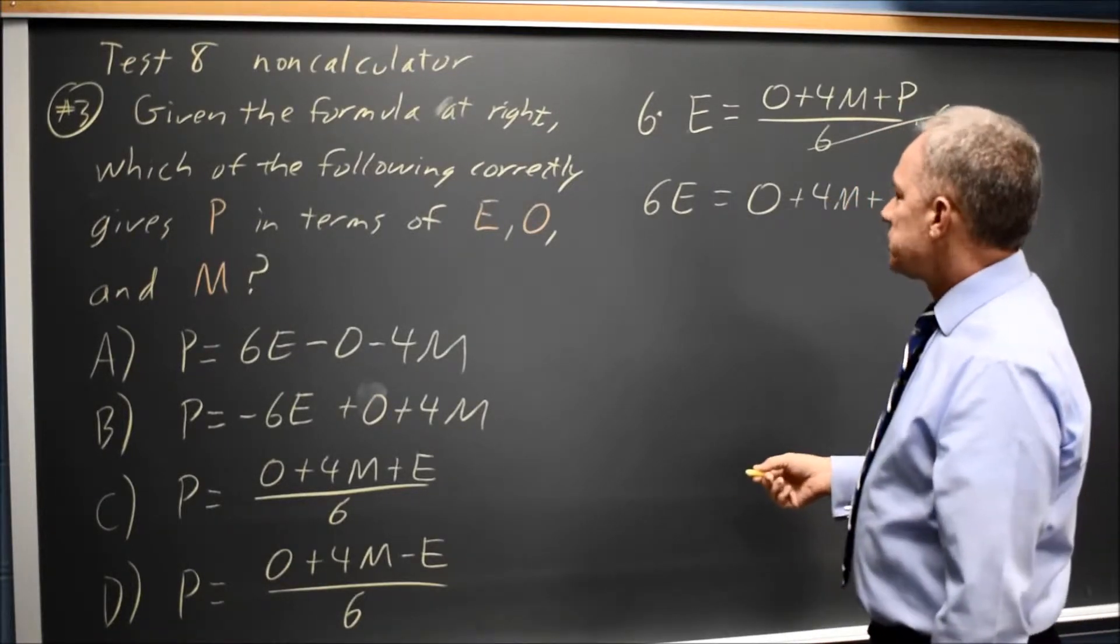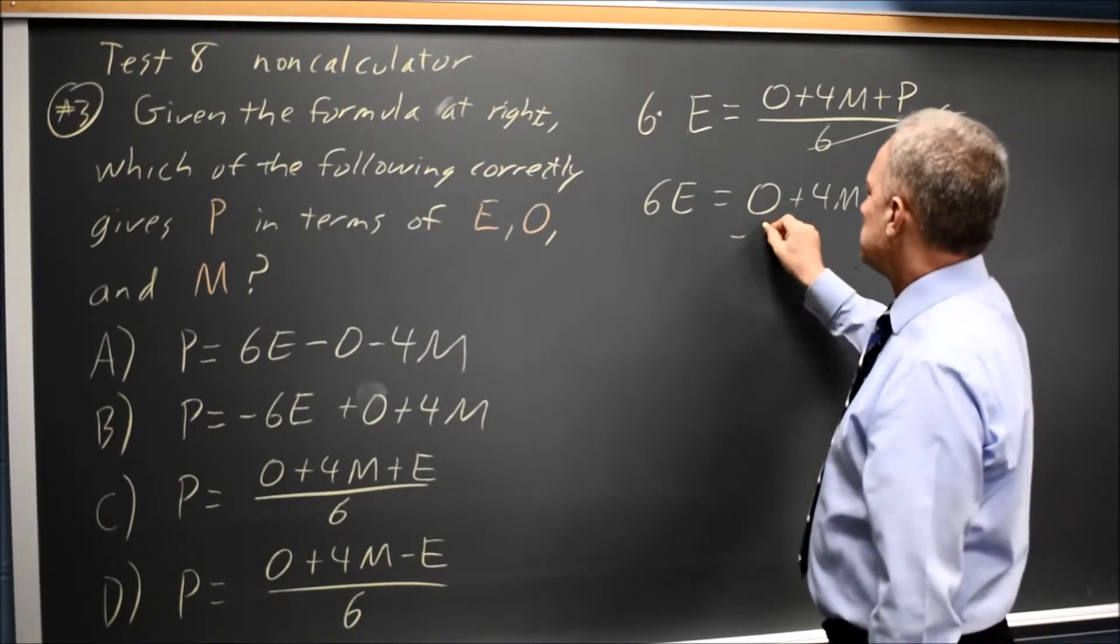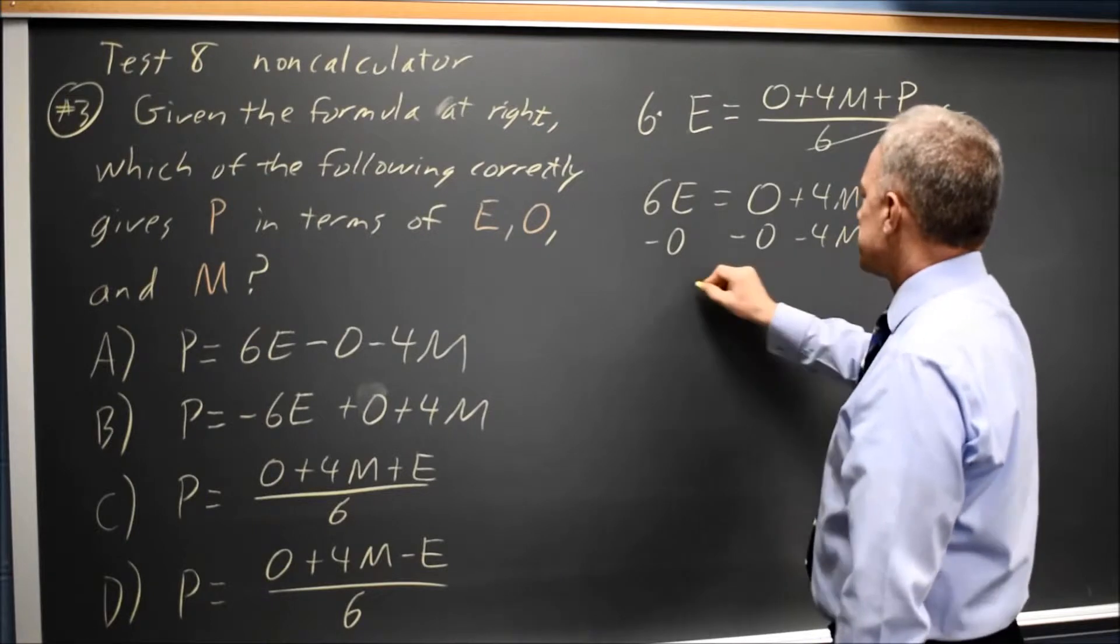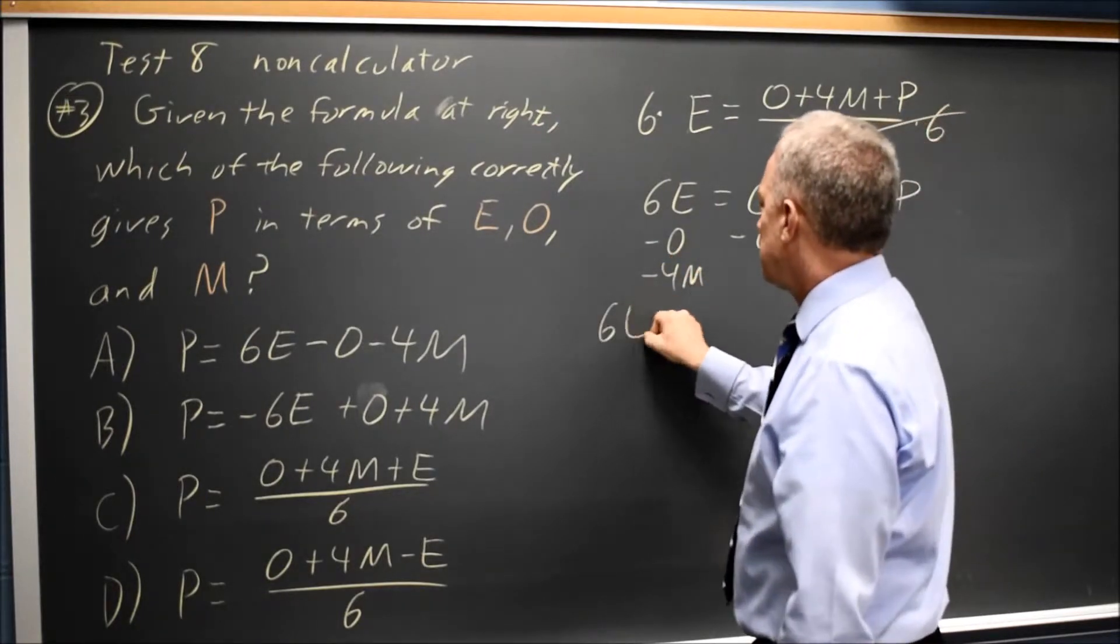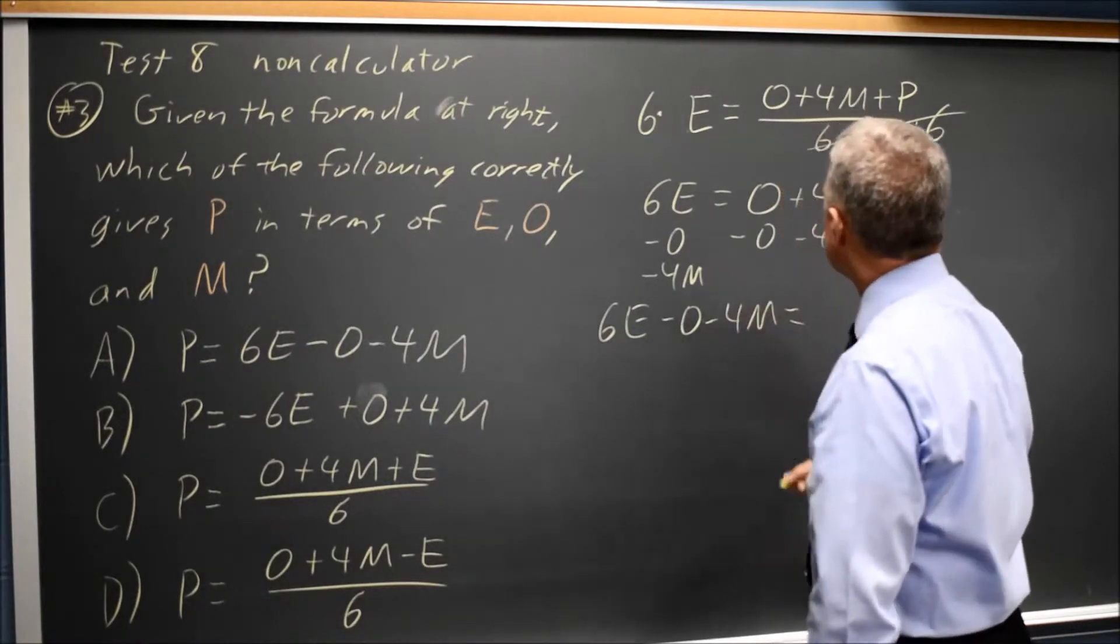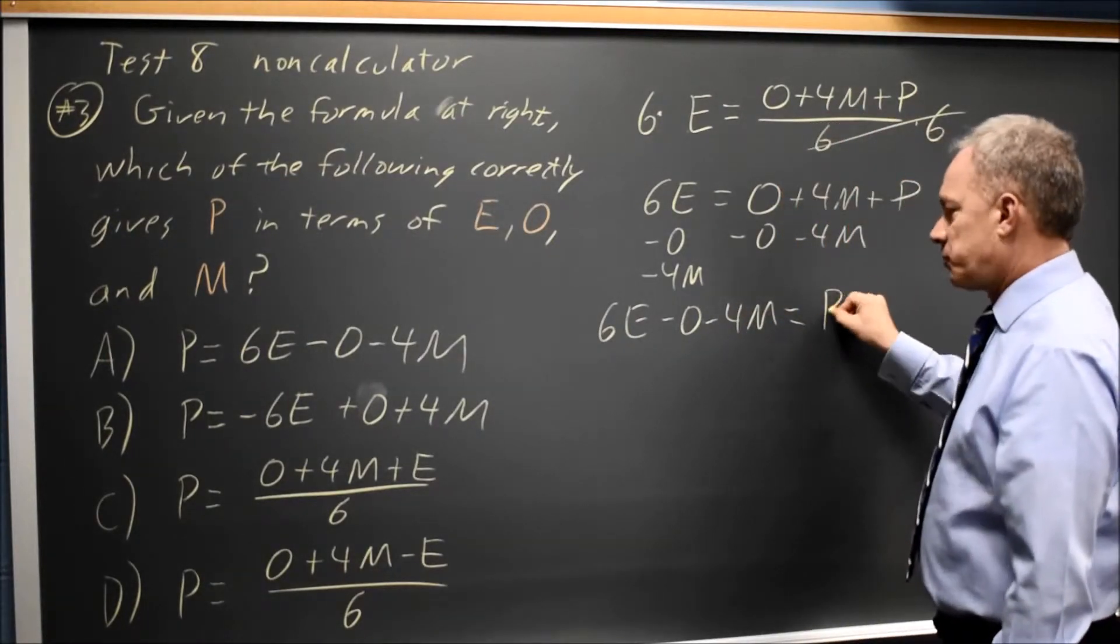I want to get P by itself, so I'm going to subtract O from both sides. I'm also going to subtract 4M from both sides. That leaves me with 6E minus O minus 4M on the left, and the only thing left on the right is P.